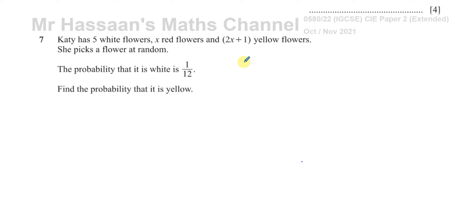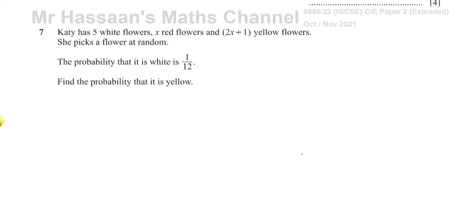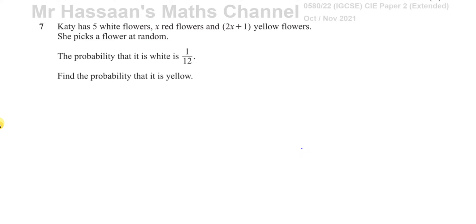Welcome back to Mr. Hassad's Maths Channel. This is question number 7 from the October-November 2021 paper 2, Cambridge 0580 exam. This question is about probability.